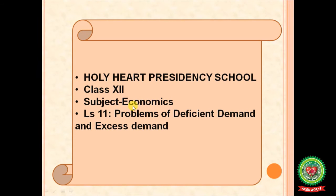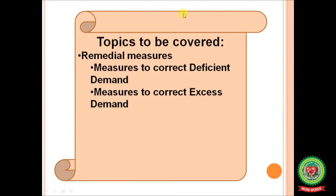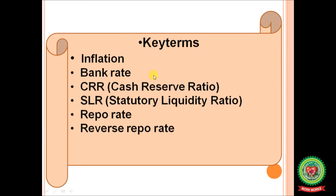Hello students, welcome back to the economics class of Plus 2 standard. We have already started Chapter 11 on problems of deficient demand and excess demand. Yesterday you learned about the meaning, causes, and consequences of deficient demand and excess demand. Today we will start with remedial measures — measures to correct deficient demand and measures to correct excess demand. Let us start with the important key terms related to this chapter.